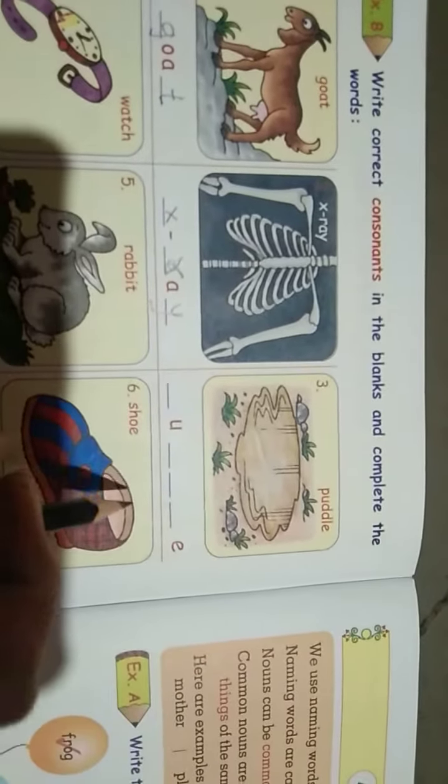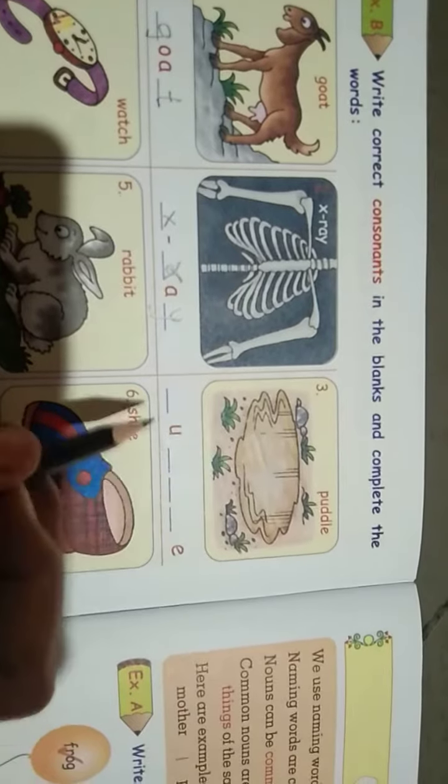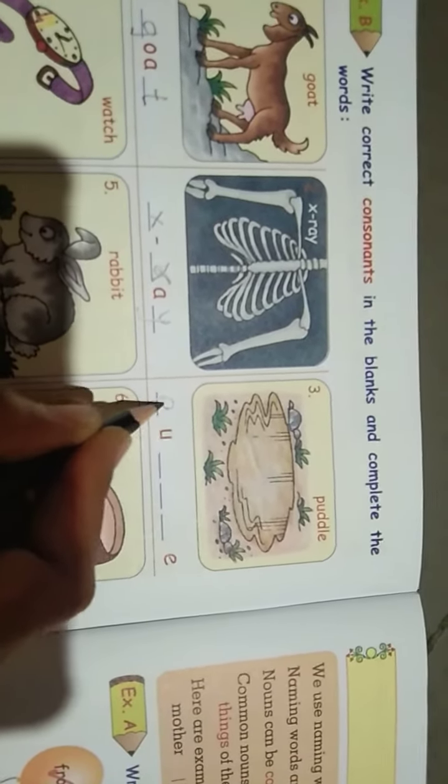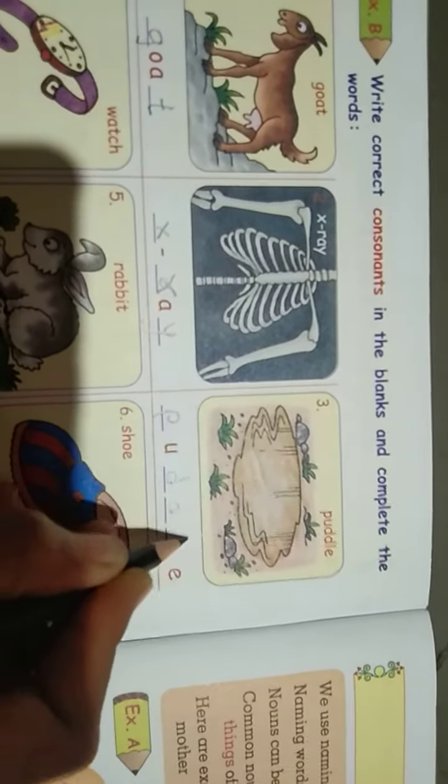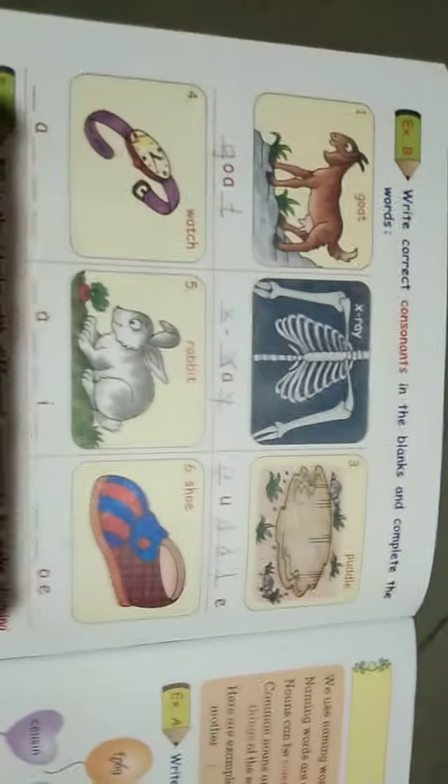Next, which letters we want to write here, observe. P, U given and D, D, L, E given.